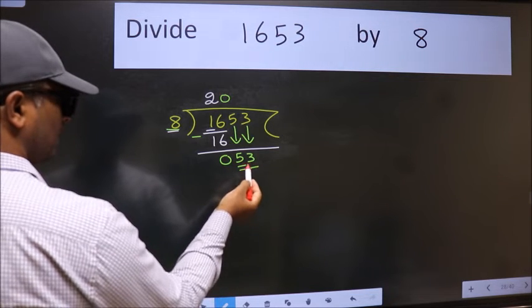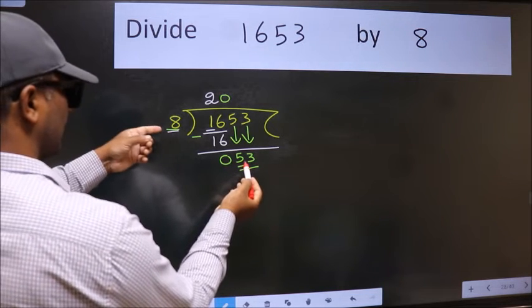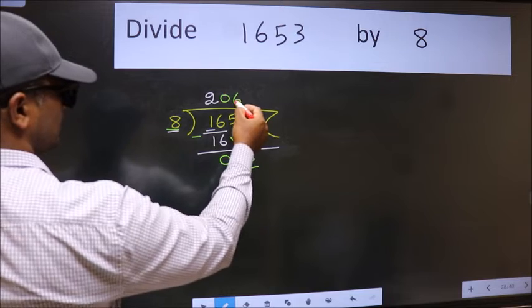So, 53. A number close to 53 in the 8 table is 8 times 6 is 48.